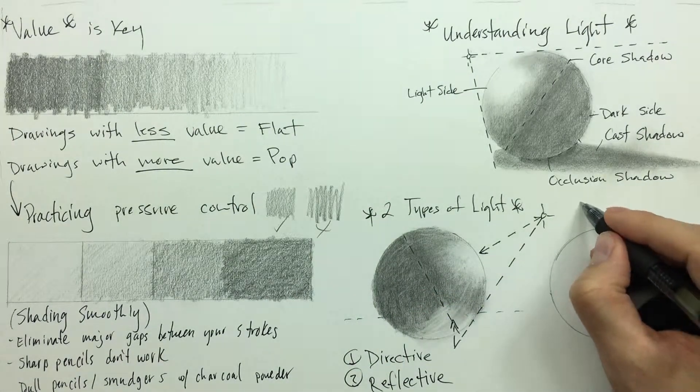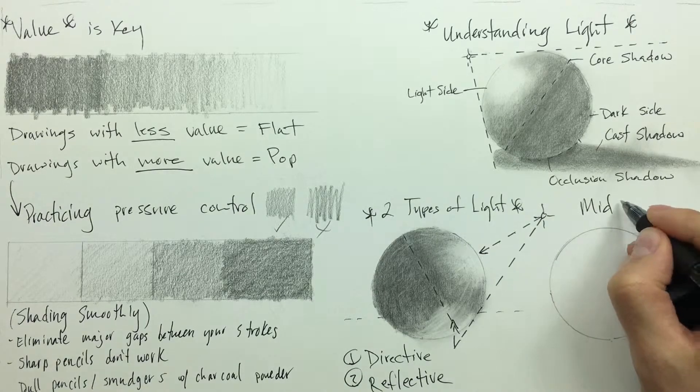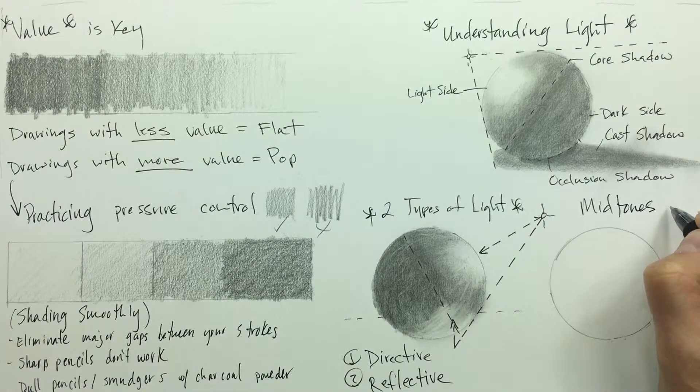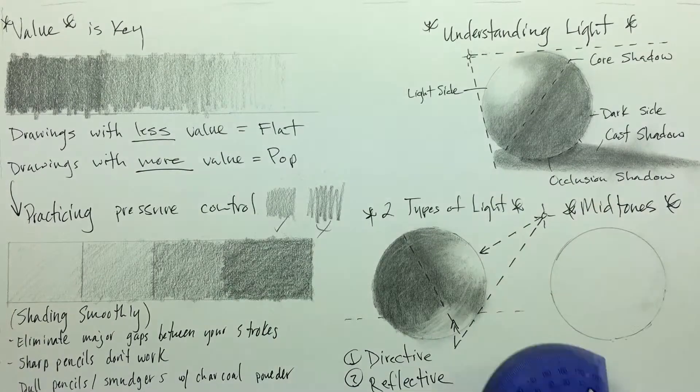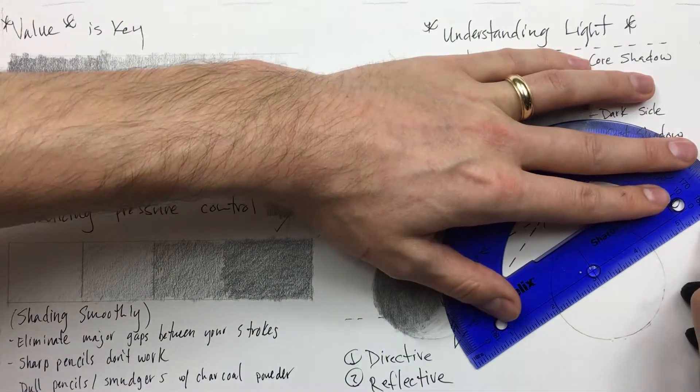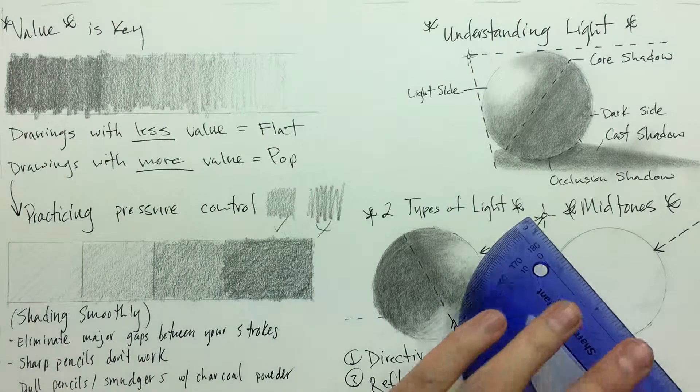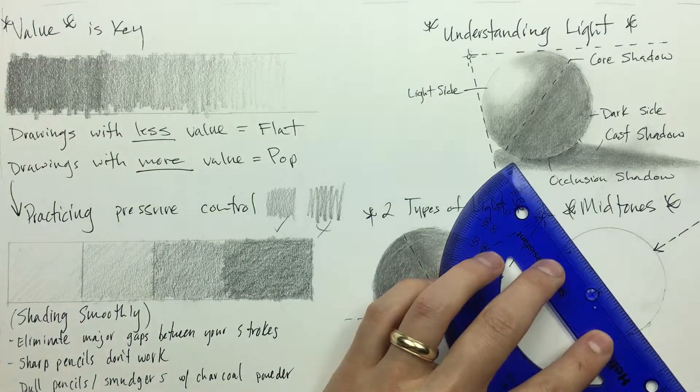Alright and then moving on to midtones. Now midtones are important because they start from the core shadow and then move their way up towards the core light. As we get closer to the light, those midtones gradually get lighter and lighter.